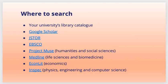Where do you start your research? Your university or library catalog is a major source. Google Scholar is the world's largest scholarly database. JSTOR is another very good store of scholarly publications where you can find older publications. Project MUSE covers humanities and social sciences. MEDLINE covers life sciences and biomedicine. EconLit covers economics-related papers. INSPEC covers physics, engineering, and computer science. Web of Science and Science Direct are also popular databases.